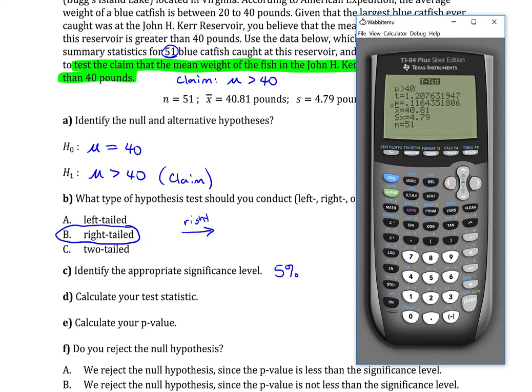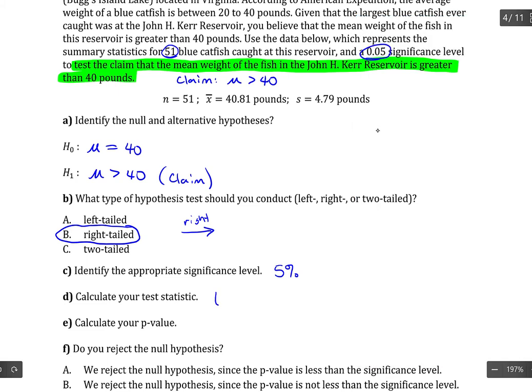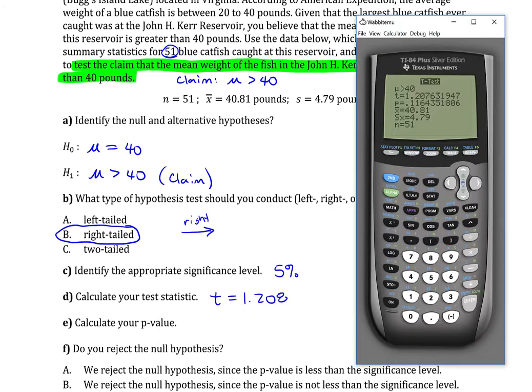So in our statistics, we've got the test statistic as 1.208. And I'm just using three decimals because it's common, but use whatever's asked in the problem. And the p-value is the next item, so 0.1164.